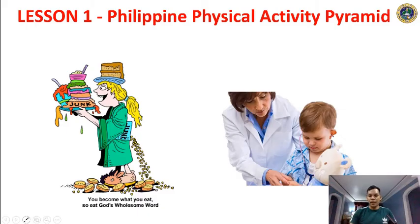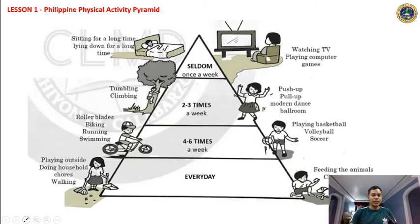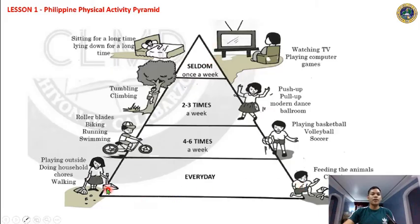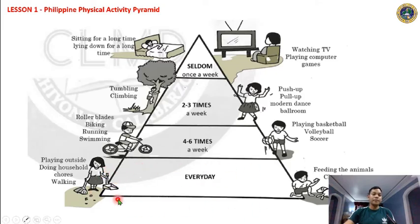Let's study the Philippine Physical Activity Pyramid. I believe you already know Maslow's hierarchy of needs, which also has the shape of a triangle. In the lowest part, this is the most important, and the upper part is not so important. In Maslow's hierarchy, the lowest and biggest part is the basic needs — food, shelter, and clothing — and the topmost is self-actualization.